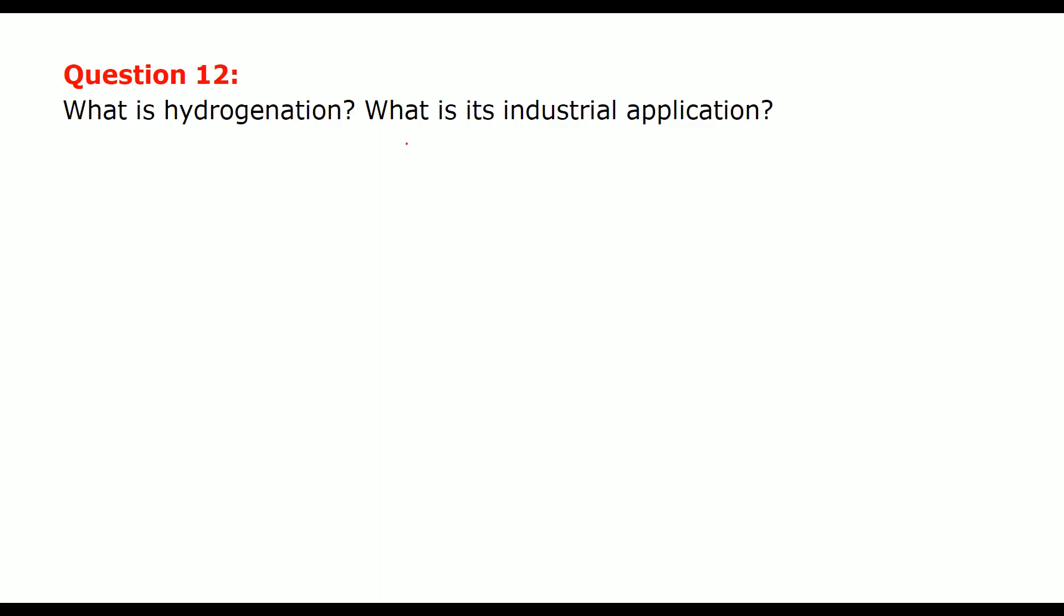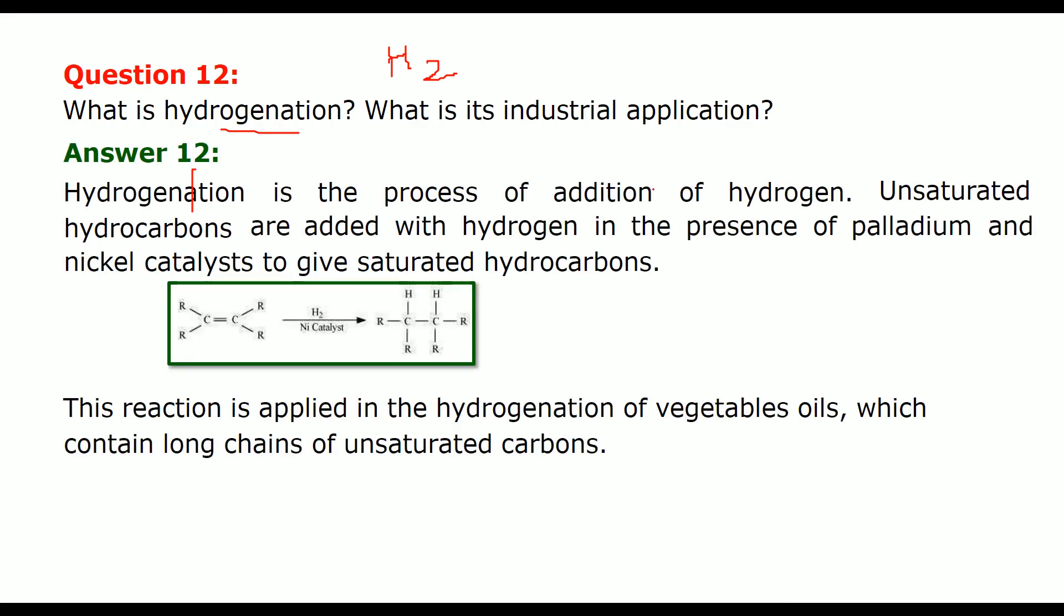What is hydrogenation and why is it important in industrial application? Hydrogenation as the name suggests application or addition of hydrogen. Now, hydrogenation is the process of addition of hydrogen as we suggested. What happens here is the unsaturated hydrocarbons as you see here are added with hydrogen in the presence of nickel catalysts or it can be palladium. And it gives rise to saturated hydrocarbons. So, that this reaction is applied to hydrogenation of vegetable oils and that contains long chain of unsaturated carbons.